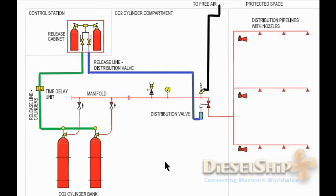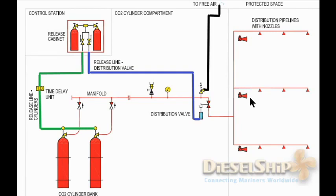Let's see the operation of the system and the major components. For this demonstration I am going to use the protected space as the engine room. We'll consider the engine room is going to be flooded with CO2. We have lots of nozzles distributed all over the engine room, from the bottom platform to the top platform. We have CO2 sounding alarms — visual and audible alarms indicating that CO2 is being flooded inside the engine room. We also have a CO2 room which has the main CO2 bottles; the number totally depends on the gross volume of the engine room.